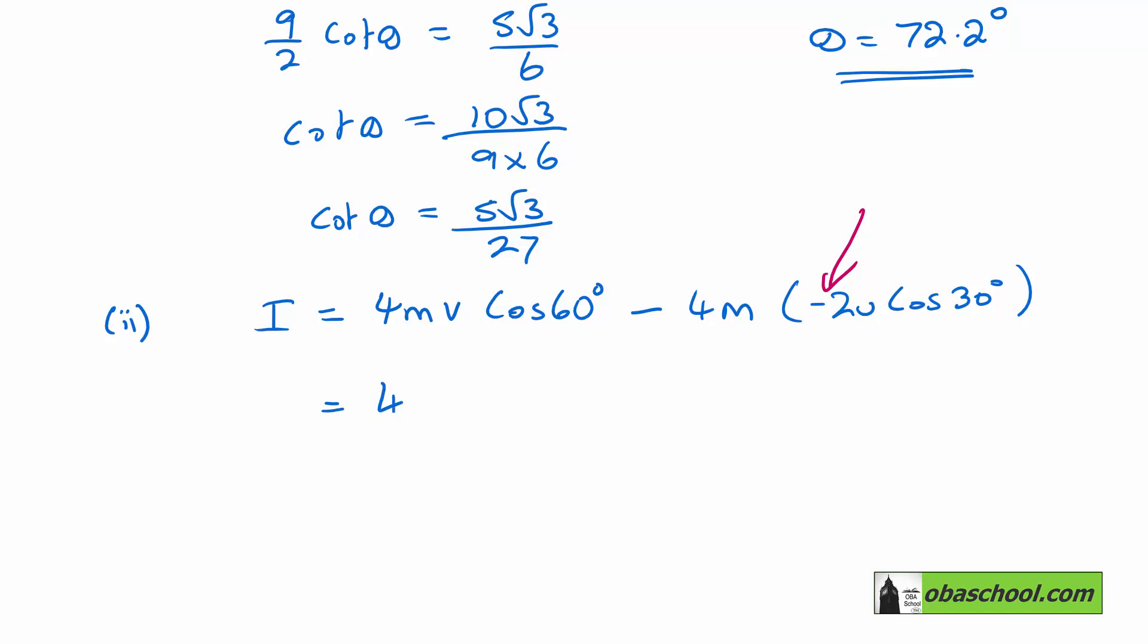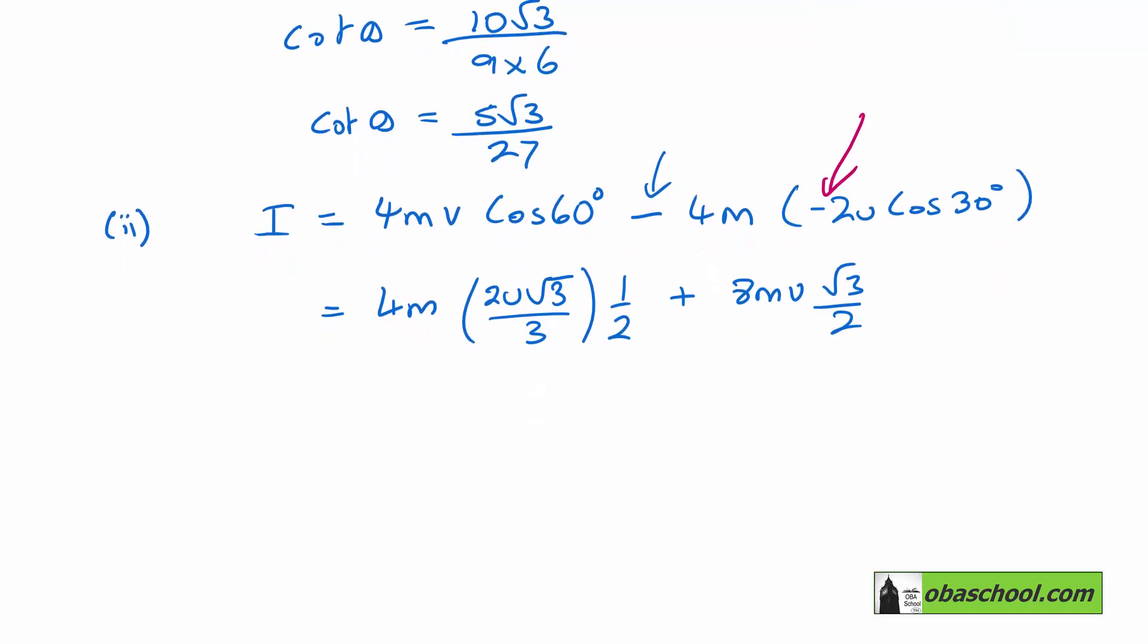So that's going to be 4M, 2U root 3 over 3. And cos 60 is a half. And then we're going to end up with a plus because of the minus and the other minus. 8M U root 3 on 2. So that is 4M U root 3 on 3. So the 2 here is cancelled with the 4.